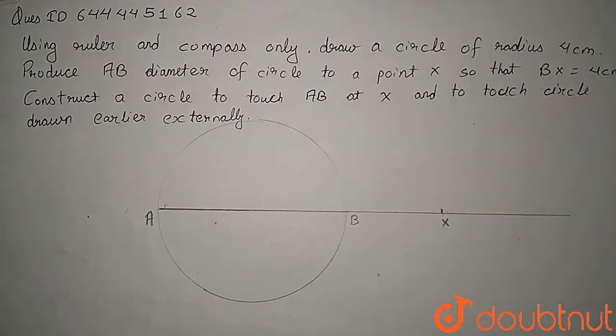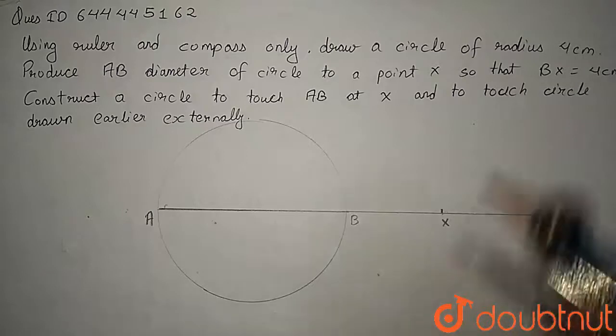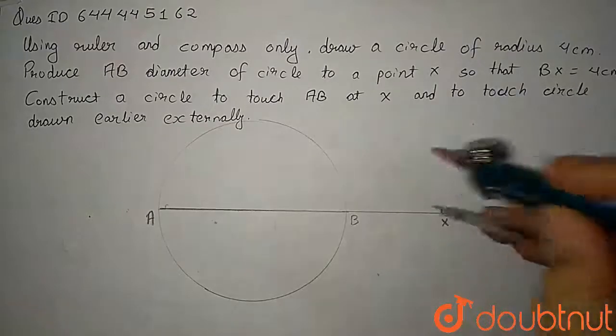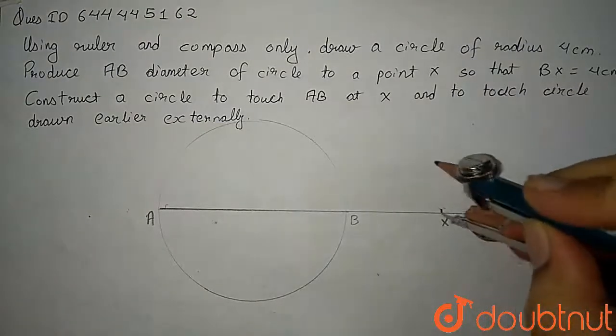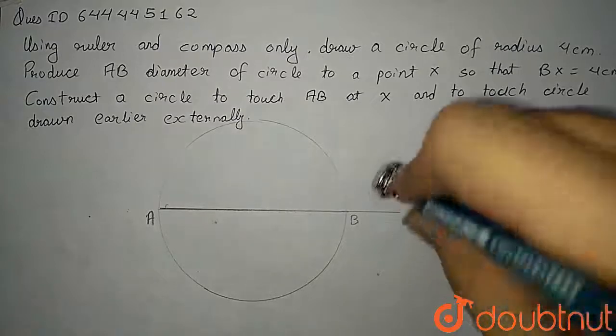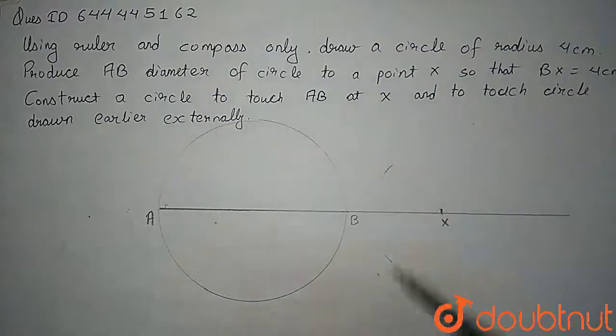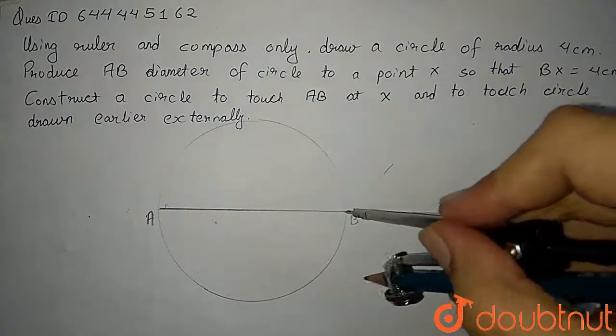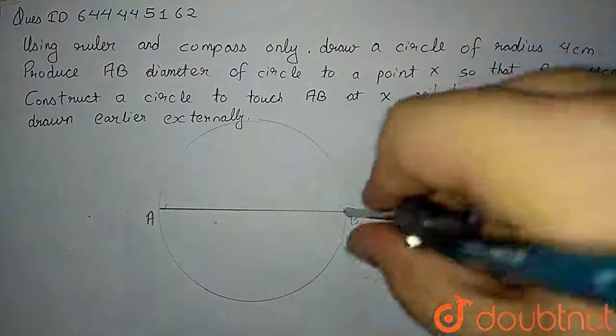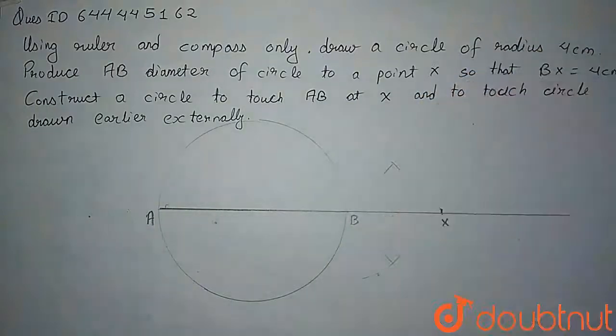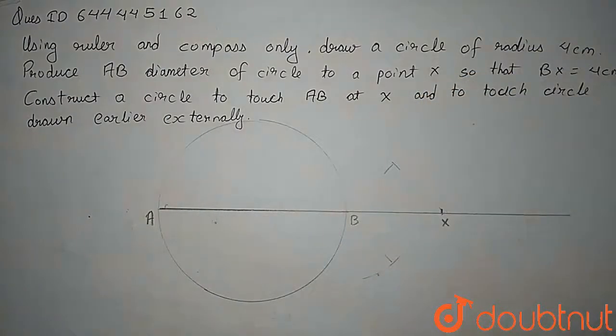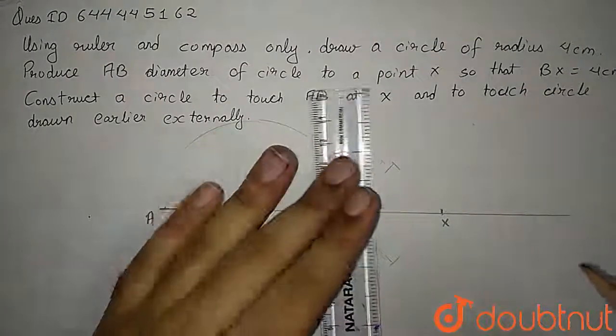So we have taken our compass and keep this compass at X and cut an arc upside, cut an arc downside, then at B cut an arc here, cut an arc here. So I have received two points and I will join them.